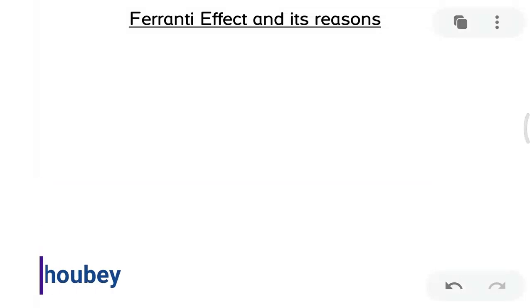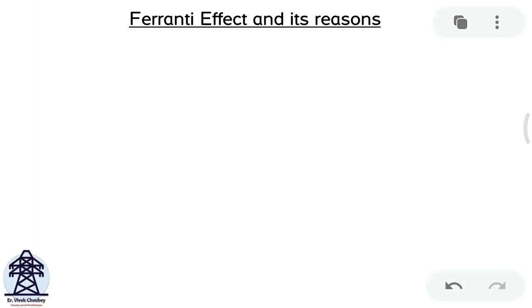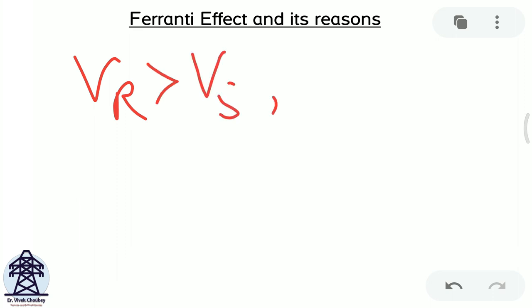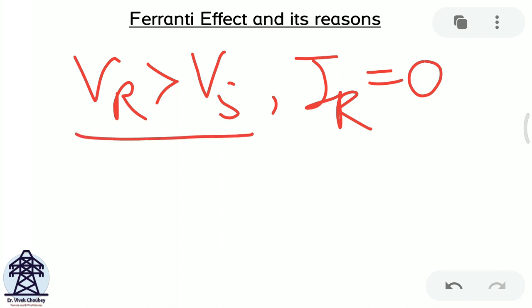Hi, this is Vivek. Welcome to my channel. Today we are going to talk about the Ferranti effect and its reasons. The Ferranti effect is defined as an effect seen on a transmission line when the receiving end voltage is greater than the sending end voltage, and this happens when the load on the receiving end side is either zero or the line is very lightly loaded. It was discovered by a scientist named Ferranti, and hence the name.